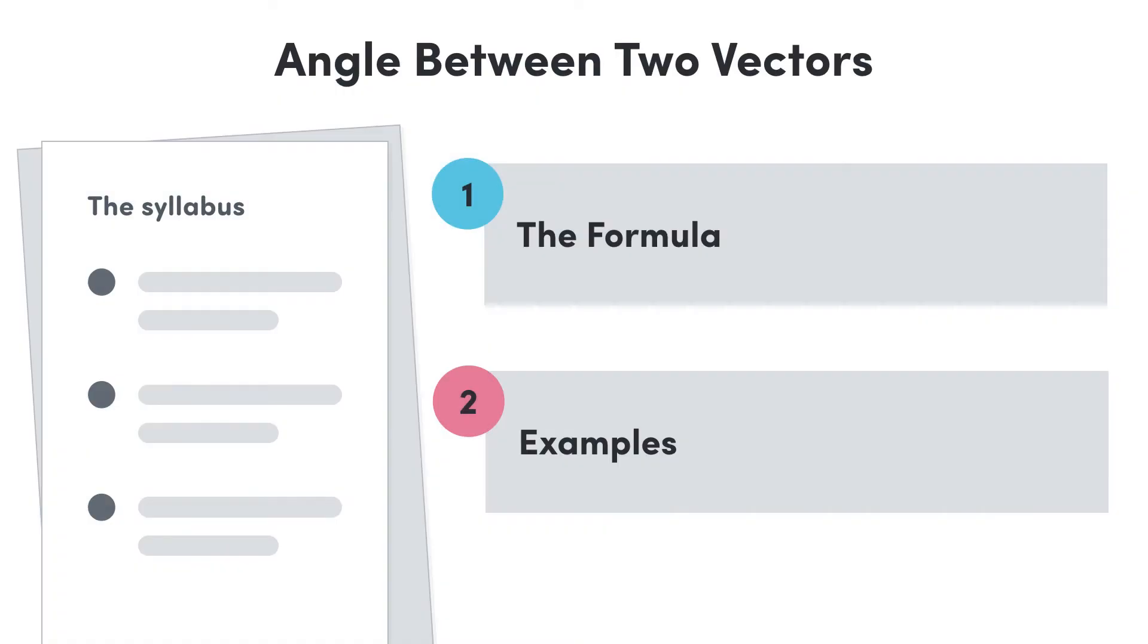Hi everyone. We have defined the dot product and explored a geometric description out of which pops a lovely formula. Today we'll directly find the angle between any two given vectors.